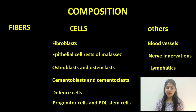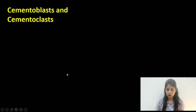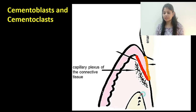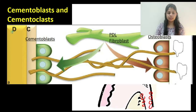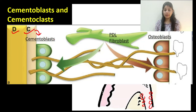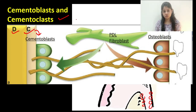Similarly, the next subset are cementoblasts and cementoclasts. Whereas osteoblasts are present along the alveolar bone, cementoblasts are seen along the cementum surface. They are derived from the dental follicle and help repair resorbed cementum by depositing new cementum. Cementoclasts, on the other hand, are not usually seen in healthy teeth — they appear only in pathologic conditions under extreme stress, causing external root resorption.